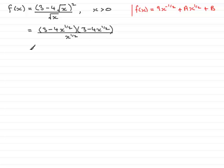Now let's multiply these brackets out in the usual way. So we've got 3 times 3, which is 9. And then we've got 3 multiplied by -4x^(1/2) is going to be -12x^(1/2). And then we've got another one here, -12x^(1/2).